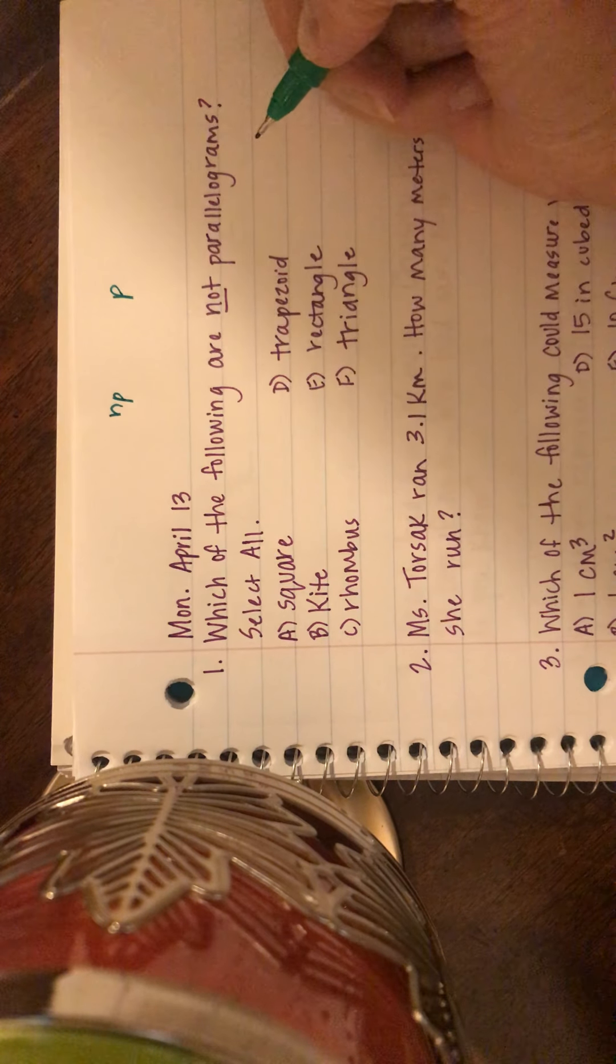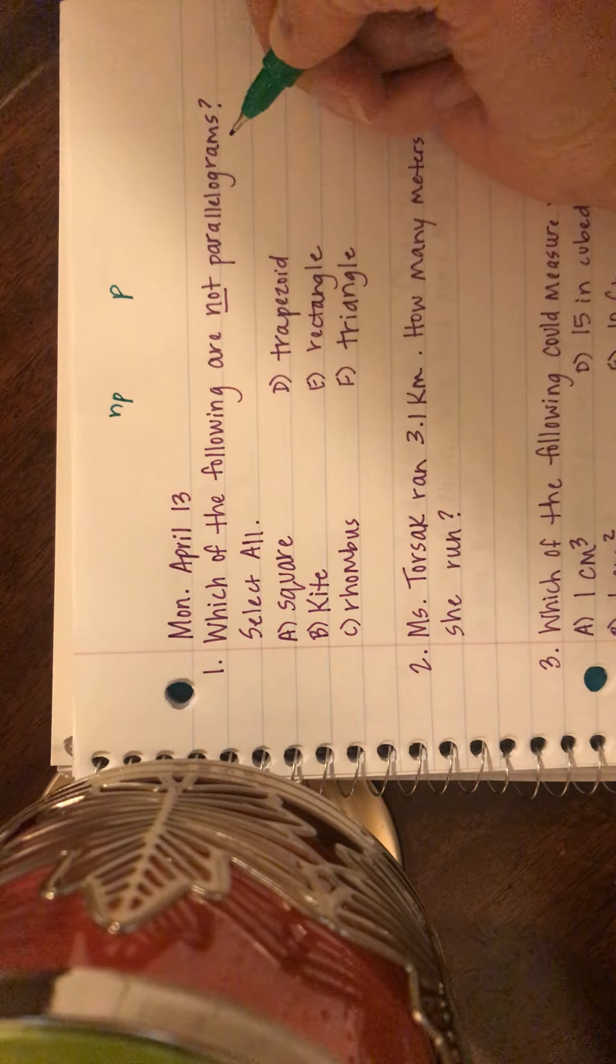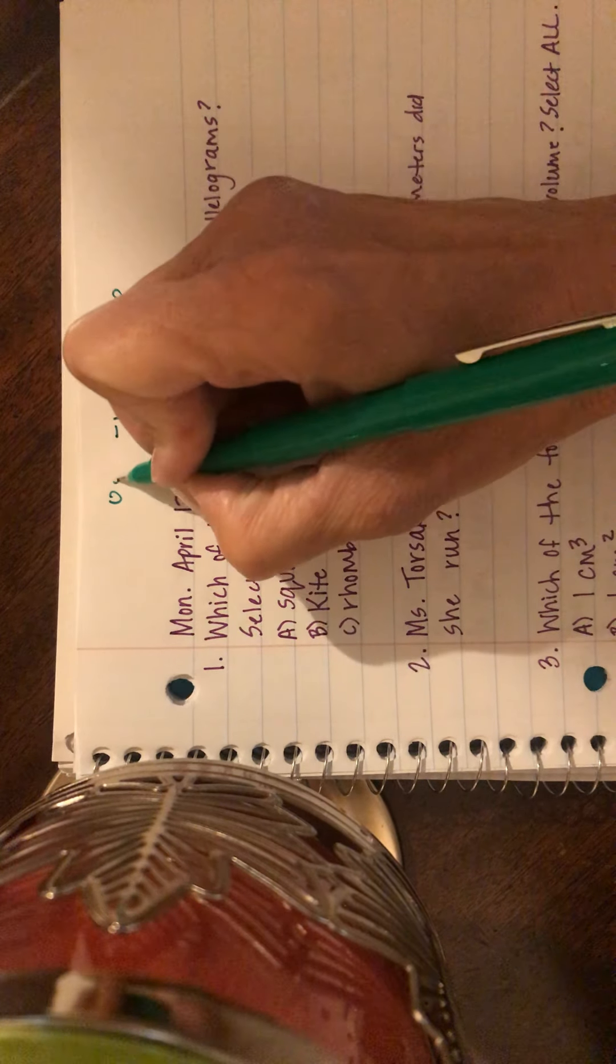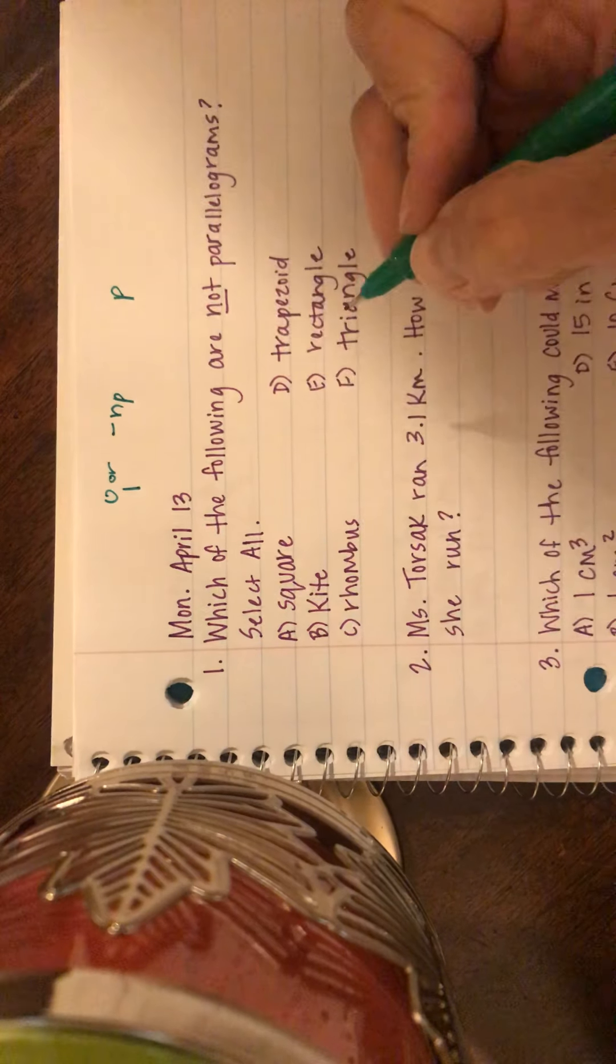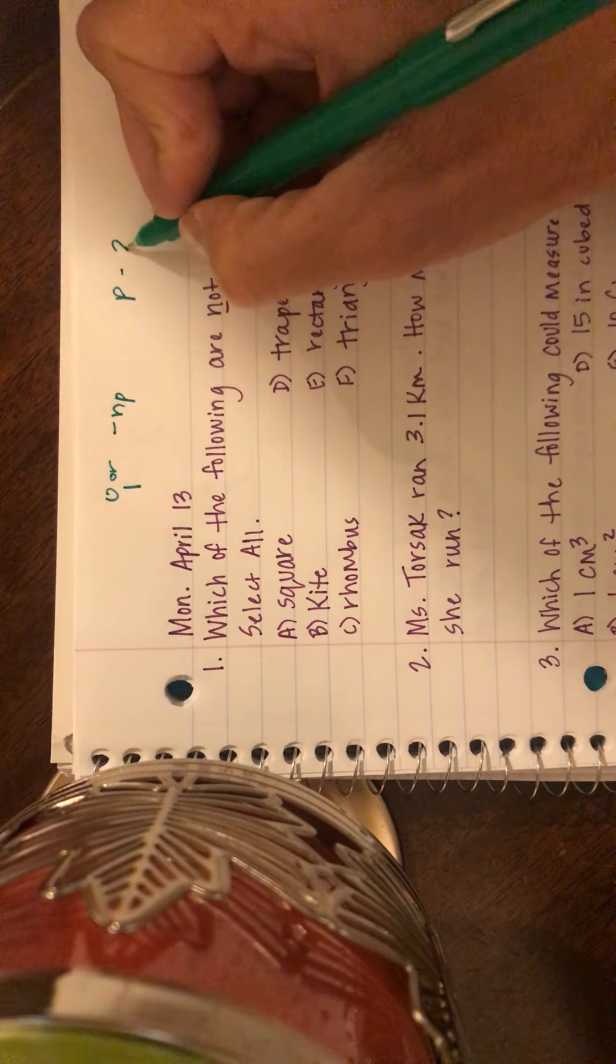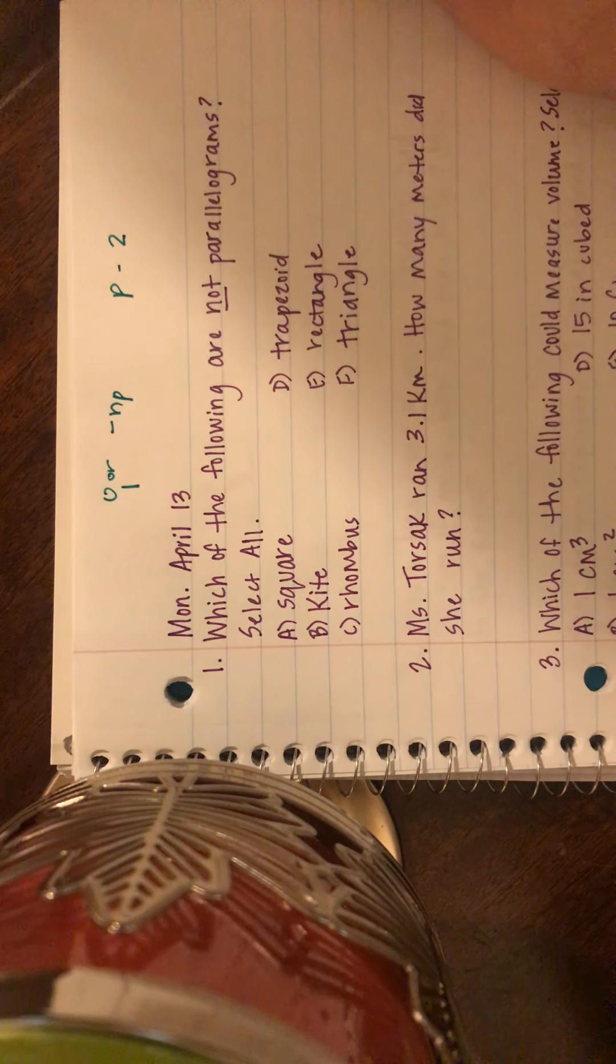In order to be a non-parallelogram, it only has zero or one set of parallel sides that are opposite each other. If it's a parallelogram, it has two sets of parallel sides opposite each other.